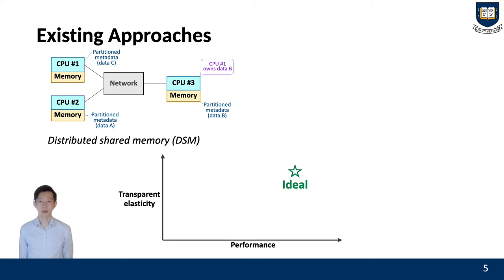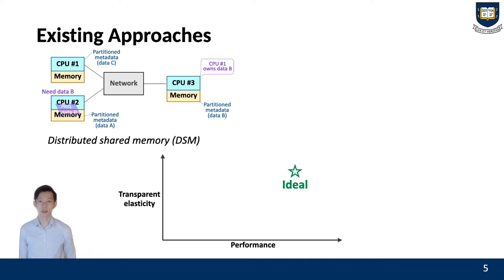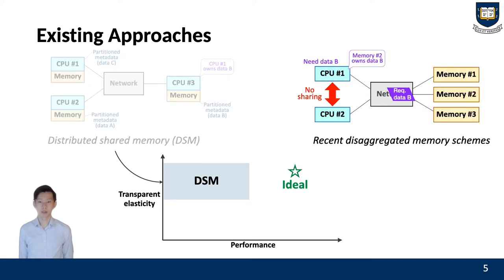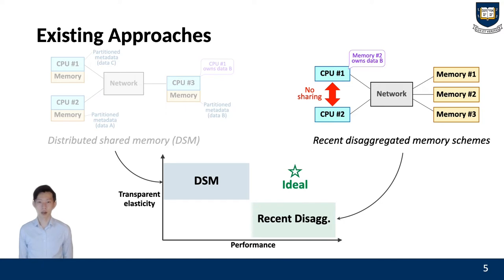In distributed shared memory, the metadata for data location is partitioned and distributed over servers. So we need to look up the metadata first, then fetch the data from the current owner. DSM provides a shared memory interface across servers, so we use a DSM design in memory disaggregation. It provides good elasticity but not high performance, due to the additional network round trips. On the other hand, recent studies compromise elasticity for high throughput by disabling shared memory, achieving high performance but with poor elasticity across CPU blades.